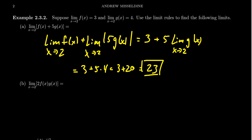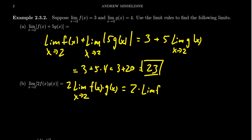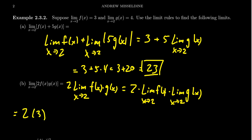If we take the limit as x approaches 2 of 2 times f(x) times g(x), we can bring out that 2. So we get 2 times the limit of f(x) times g(x) as x approaches 2. Then by law C — the product law — we get 2 times the limit of f times the limit of g(x) as x approaches 2. By assumption, the limit of f was 3 and the limit of g was 4, so we end up with 2 times 3 times 4, which is 2 × 6 = 12 × 2 = 24. That would be the limit in that situation.